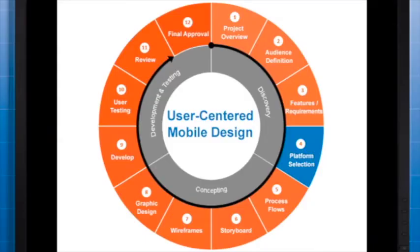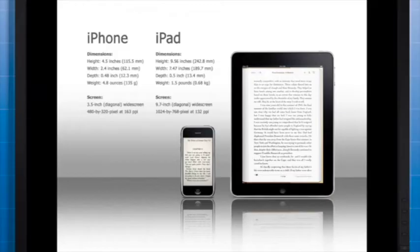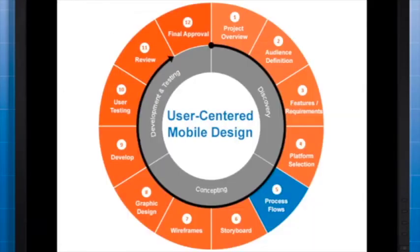Often clients have preconceived notions that they want either a tablet or phone app. This decision should be reassessed after gaining a better understanding of the app's purpose, how and where it will be used, and even what devices the client has access to. Even though the next phases are just sketching rough concepts, it is important to know which device you're designing for so that you can make sure you're working in consistent proportions and the amount of information on each screen is relevant to the given screen size.